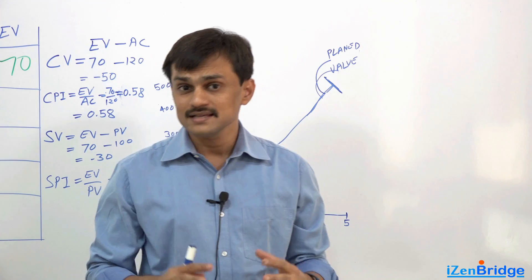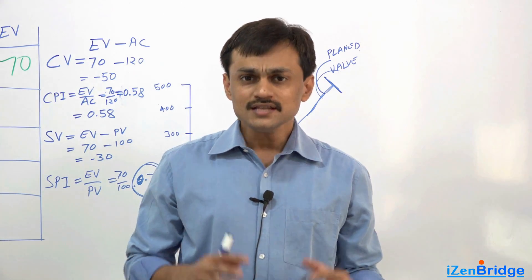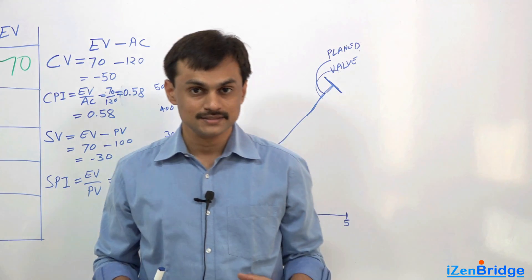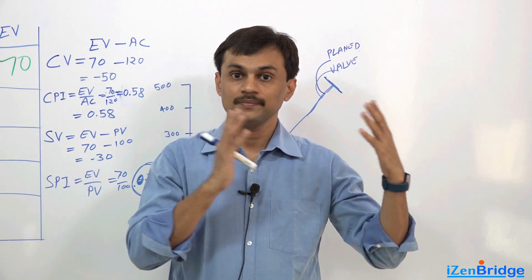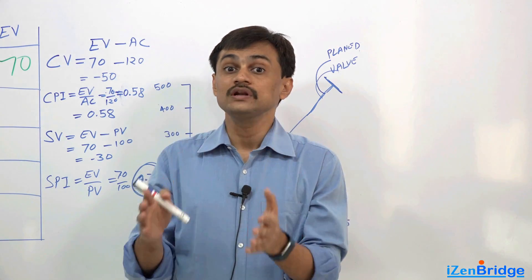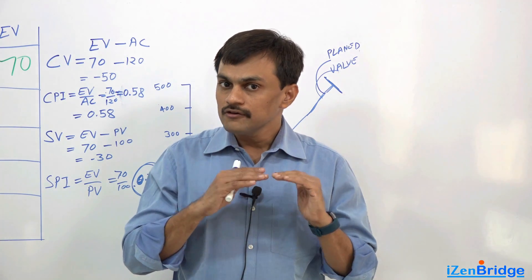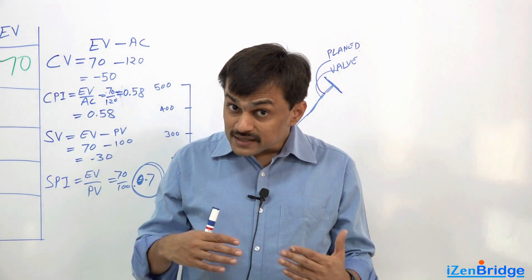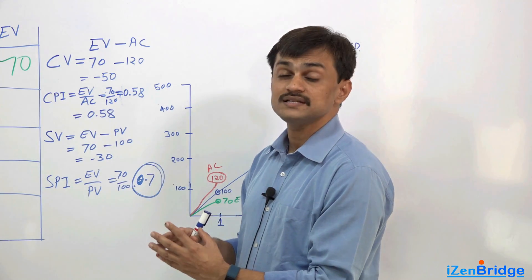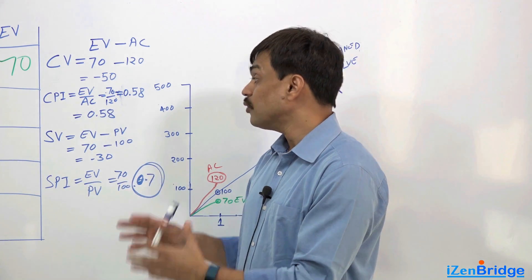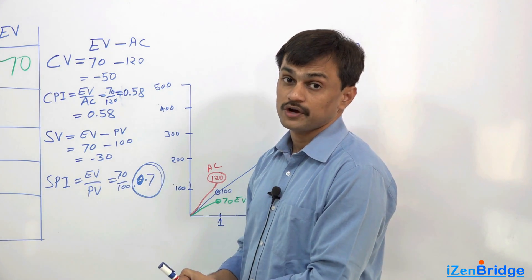Here we are making some forecasts using our earned value calculations. This topic is all about trend analysis. We know this was the planned value, this is the money we spent. We were planning to earn 100, we could only earn 70 and we spent 120 dollars. So this is the story of day 1. We calculated the variances and we understand that we are doing very bad as far as cost performance index is concerned — we only earn 58 cents for every dollar spent because the cost performance index was 0.58.